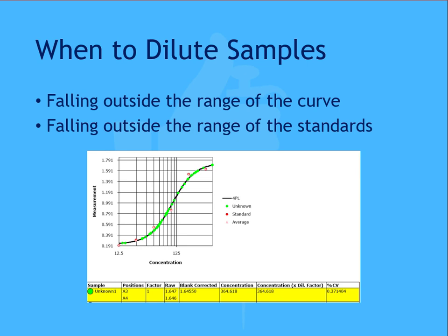Each laboratory will define their own acceptance criteria for specific assays, so it may be that a certain degree of extrapolation is permitted, for example no more than 15%, but for this example, we'll use the criteria that any samples with extrapolated results should be re-assayed for confirmation.